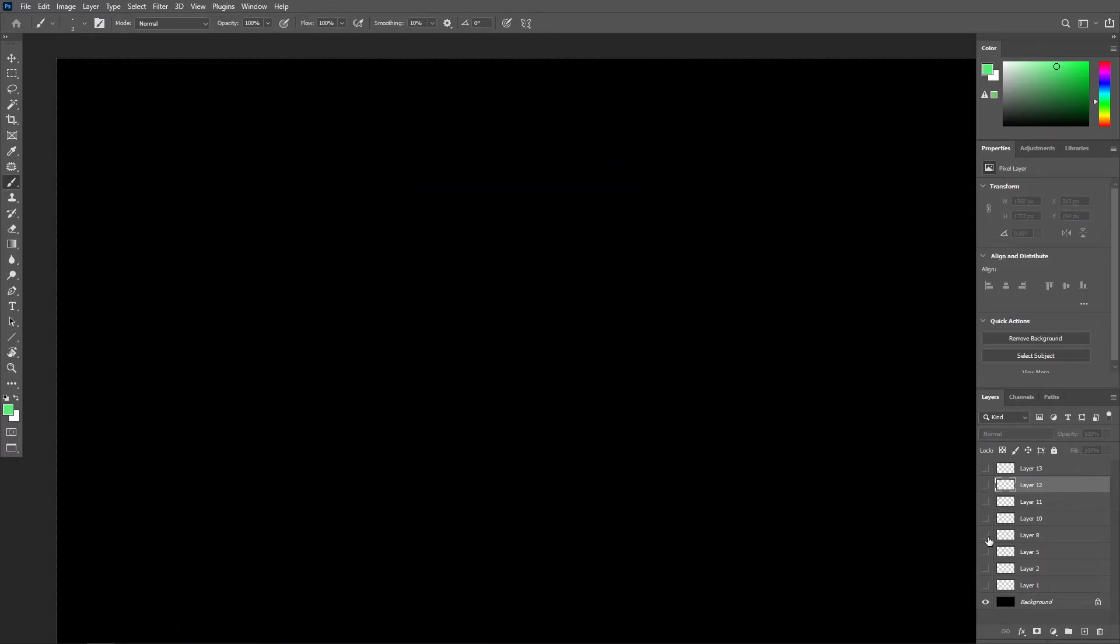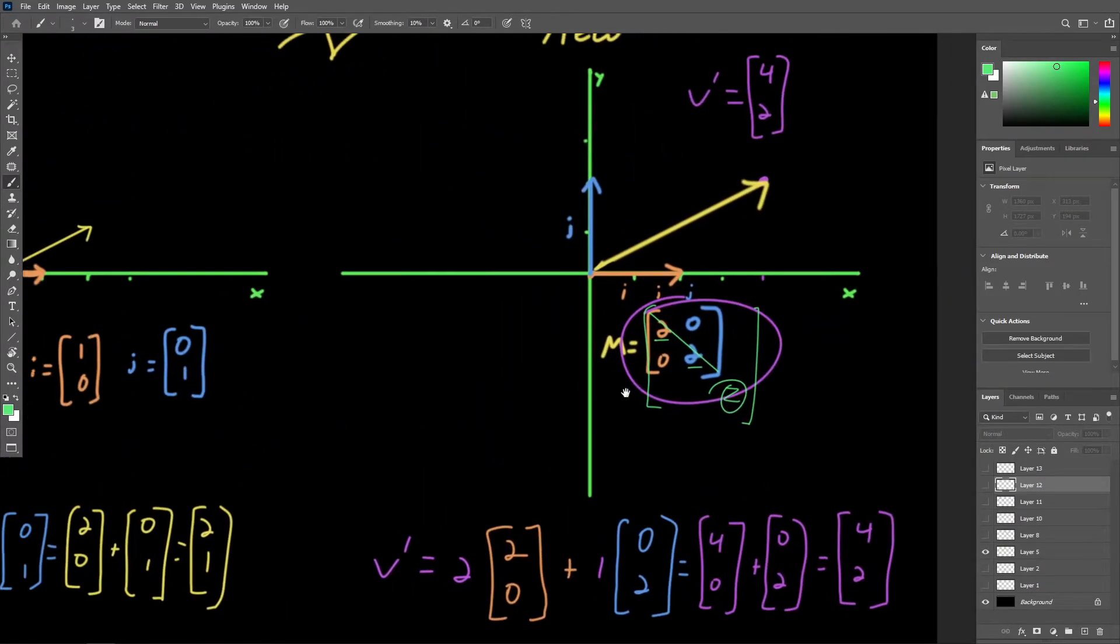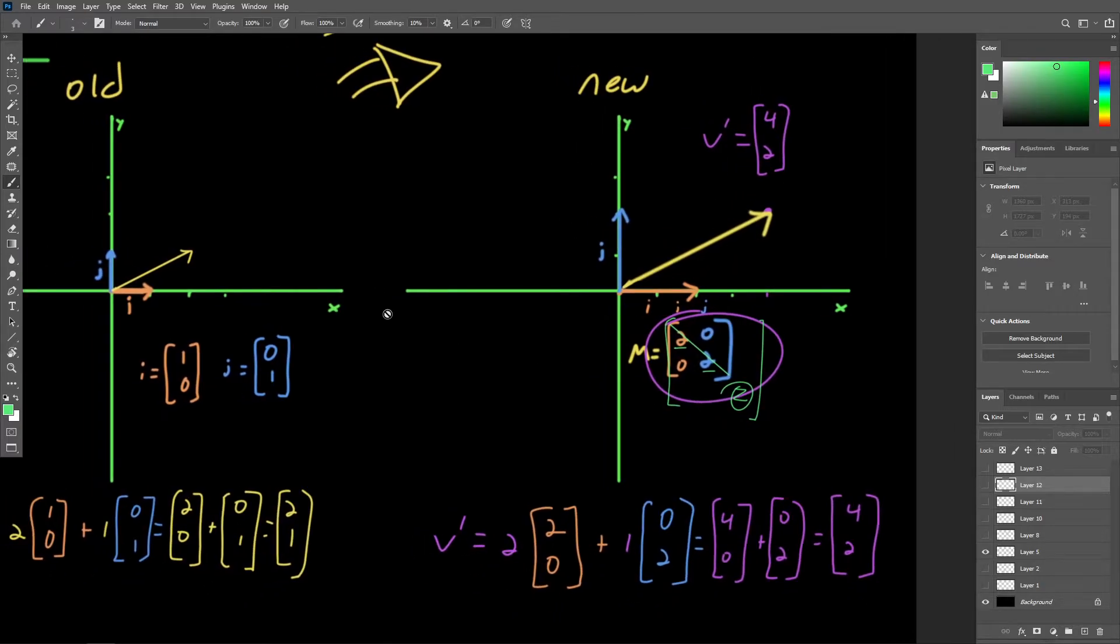So turns out what we were doing back here with this linear combination was in fact, matrix multiplication between this old vector and this matrix representing, of course, where the basis vectors land in the new coordinate space.